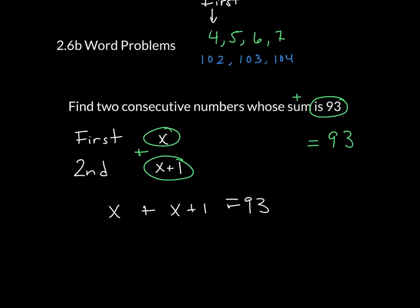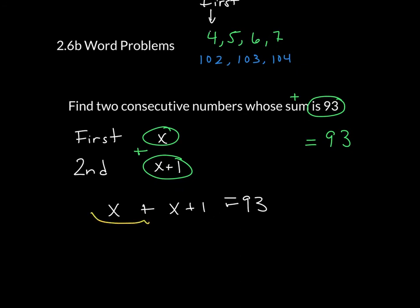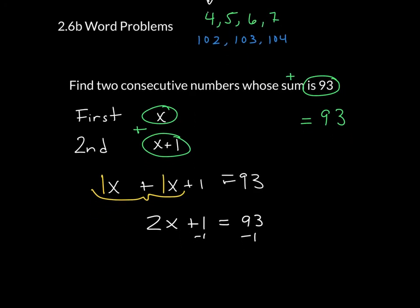Now to solve this, I have to first combine like terms and understand that both of those x's have an understood one in front of them. So that leaves me with 2x plus 1 is equal to 93. I subtract 1 from both sides. I'm left with 2x is equal to 92. Divide both sides by 2. And that tells me my first value x is equal to 46.